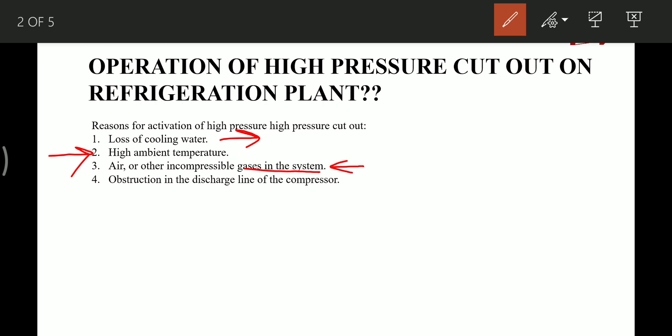The third point is air or other incompressible gases in the system. I have already covered this in detail in one of my videos on my YouTube channel, where I discussed the effects of these incompressible gases and how we remove them. The fourth point is obstruction in the discharge line of the compressor.